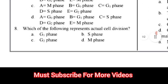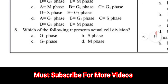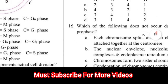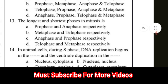Question number 8: Which of the following represents actual cell division? Options: G1 phase, S phase, G2 phase, M phase. The correct answer for question number 8 is option D — M phase.